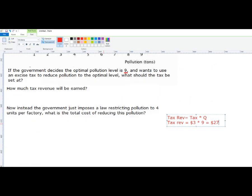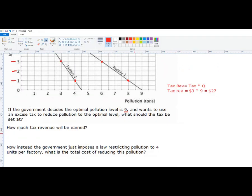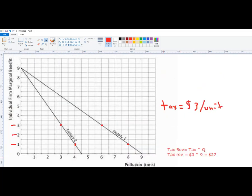Slightly different issue that's going on here. Now the government just imposes a law restricting pollution to 4 units per factory. What's the total cost? So now each factory is allowed to produce 4 units. So we'll just go to here. We're going to actually follow this one up. So this is just a restriction. Quantity stops here.